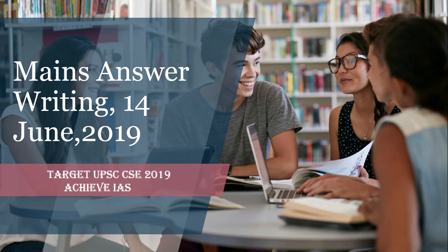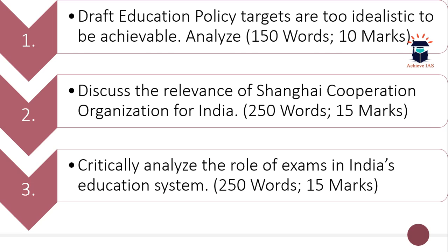Today is 14 June. The first question is: 'Draft education policy targets are too idealistic to be achievable — analyze.' The word limit is 150 and maximum marks are 10. The second question is: 'Discuss the relevance of Shanghai Cooperation Organization for India.'